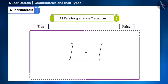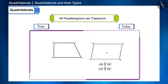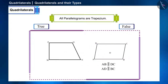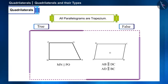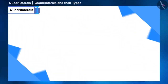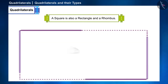By the definition of a parallelogram, a pair of its opposite sides are parallel. To be a trapezium, a pair of sides must be parallel — that is the only condition. Therefore we can say that parallelograms are trapezium, meaning the given statement is true.